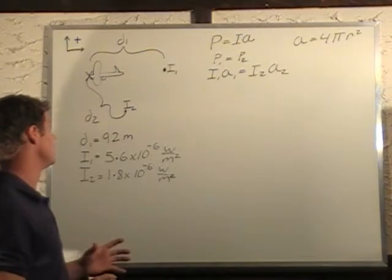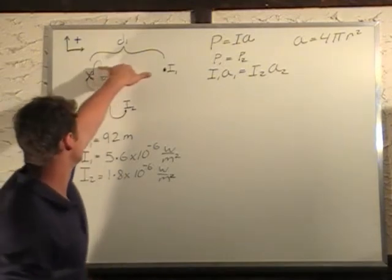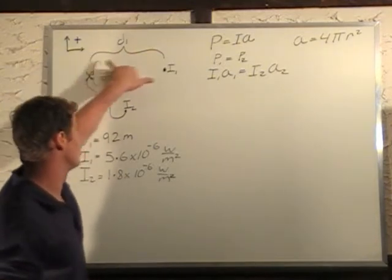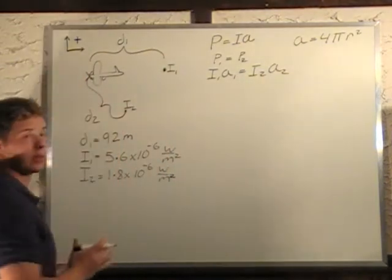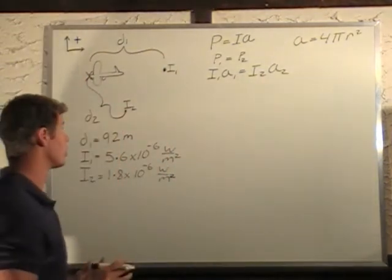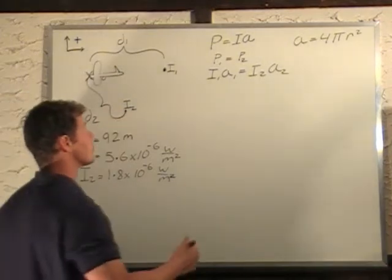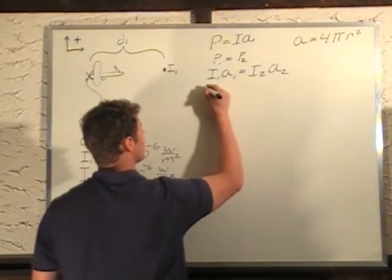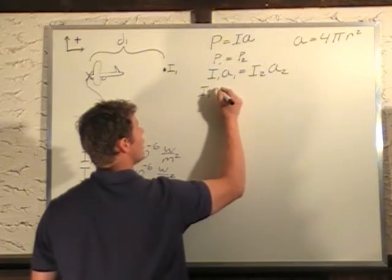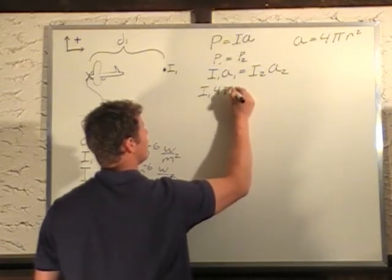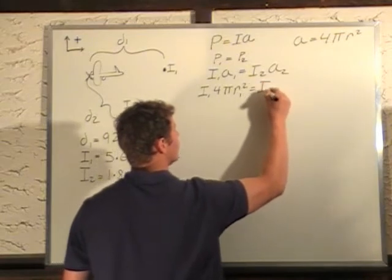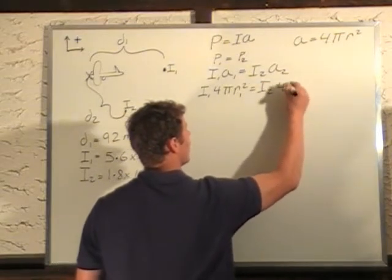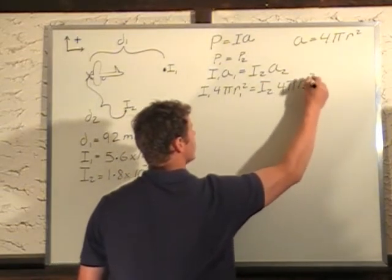We're looking for basically, this is the radius, D1 is the radius out to this sphere, and D2 is going to be the radius out to the other sphere. So we're going to be looking for r2. Let's plug in for area in this equation. We have I1, A1 is 4 pi r1 squared, equals I2, 4 pi r2 squared.